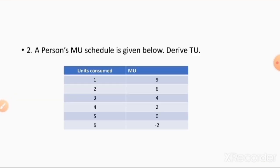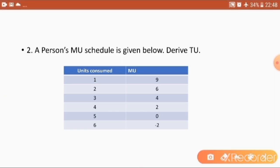Now we will go to the second problem. Here the marginal utility is given and we have to derive the total utility. We already know that total utility is equal to the summation of marginal utility. So how we will find out the total utility here?